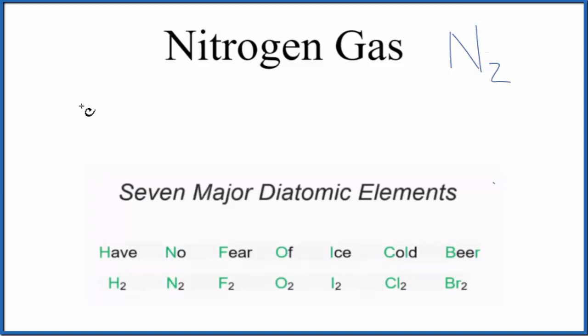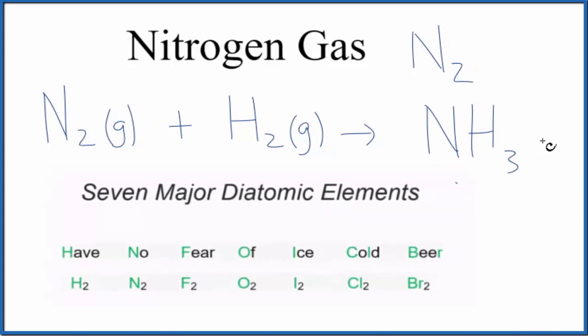So if we have an equation, let's say N2, which is a gas, so nitrogen gas plus another diatomic hydrogen gas, that'll be H2. They'll bond together to form NH3. This is ammonia. That'll also be a gas.